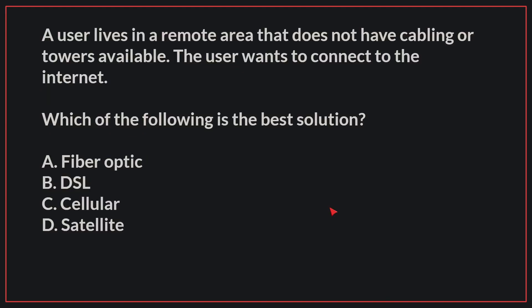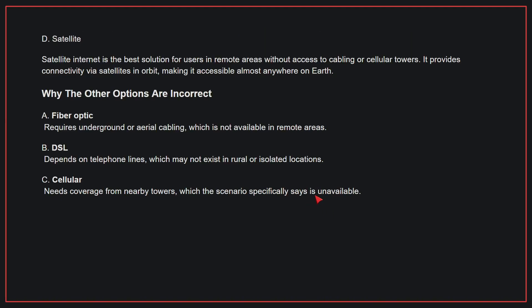A user lives in a remote area that does not have cabling or towers available and wants to connect to the internet. Which of the following is the best solution? The correct answer is D, satellite. Satellite internet is the best solution for users in remote areas without access to cabling or cellular towers. It provides connectivity via satellites in orbit, making it accessible almost anywhere on Earth.